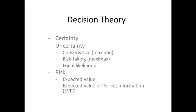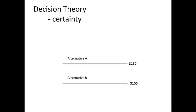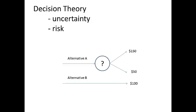Decision theory includes mathematical techniques that can help you decide among alternatives whose results will be seen in the future. If the sequence of events from now to the future is certain, the decision is straightforward — you choose the alternative whose future outcome you prefer. But if there is an intervening event that is uncertain or risky, you cannot be sure which alternative is preferred.